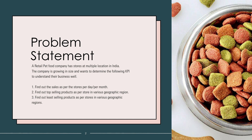Following are the KPIs: Find out the sale as per the store per day per month. Find out top selling products as per store in various geographic regions. Find out least selling products as per store in various geographic regions.